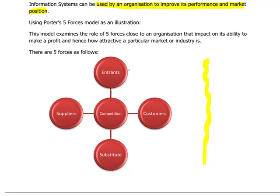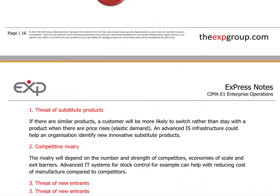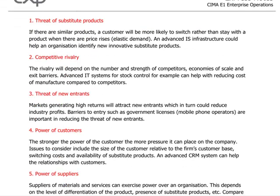The five forces are: potential entrants to that market, suppliers, customers, substitute products, and the competition. These five forces will all be applying various different pressures to an organization. So an organization would need to obtain information to see how much pressure each of these forces is placing on them, and importantly, what they should do about it. We have more detail on the next page about Porter's Five Forces, which provides examples of the various forces within the model.